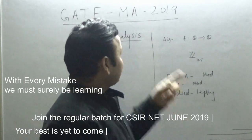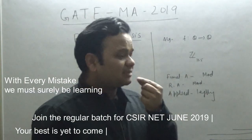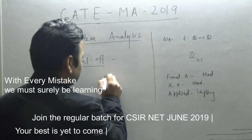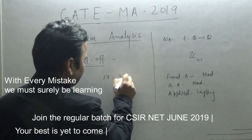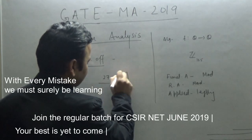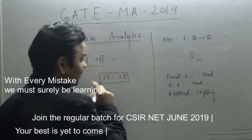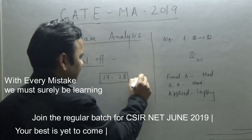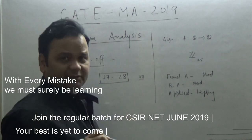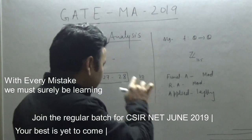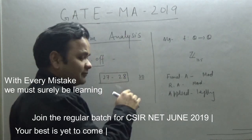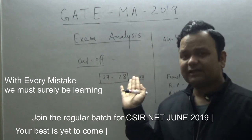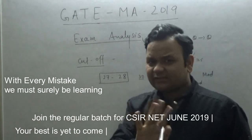Coming to the expected cutoff — the expected cutoff is going to be around twenty-seven to twenty-eight. This is the expected cutoff for this Gate exam this year. Last year in 2018 the cutoff was thirty. So this time, I think — it's my guess — the cutoff is going to be around twenty-seven to twenty-eight, something like that.